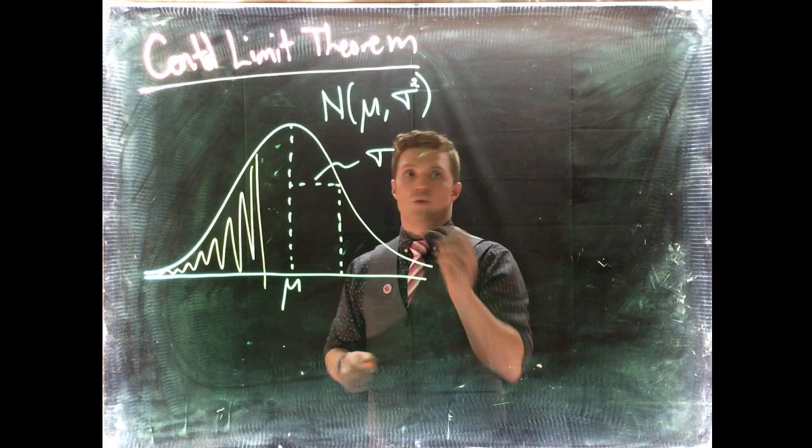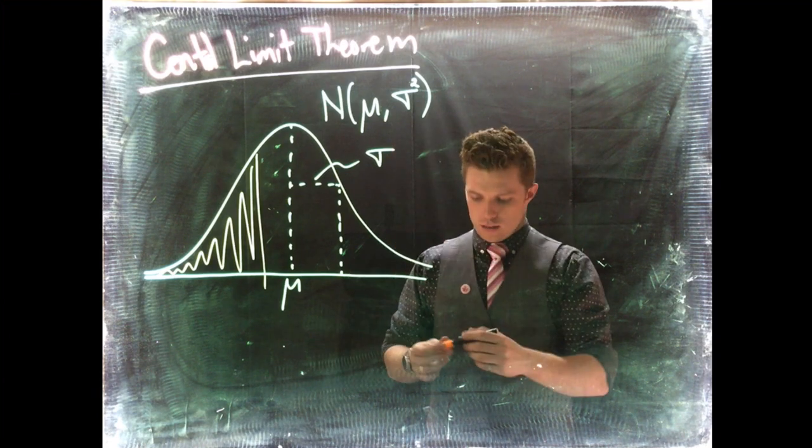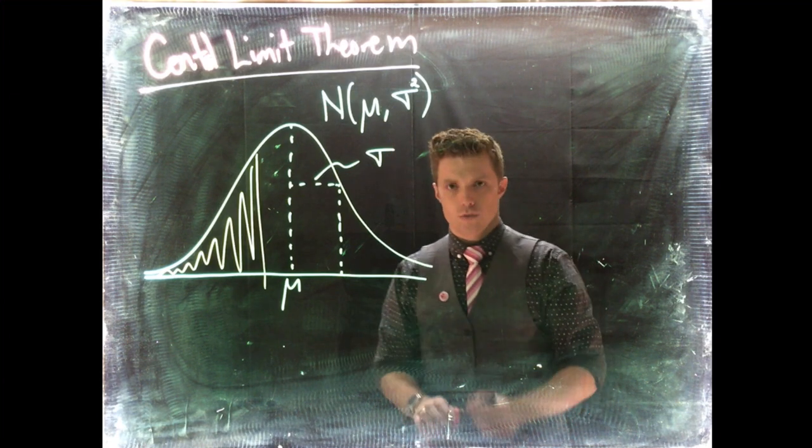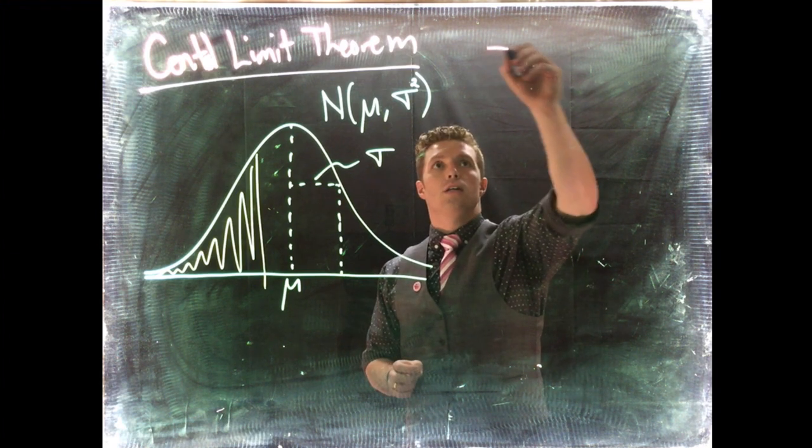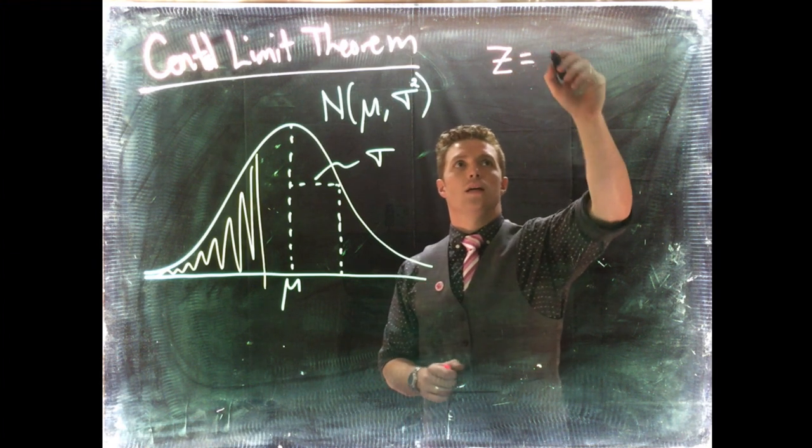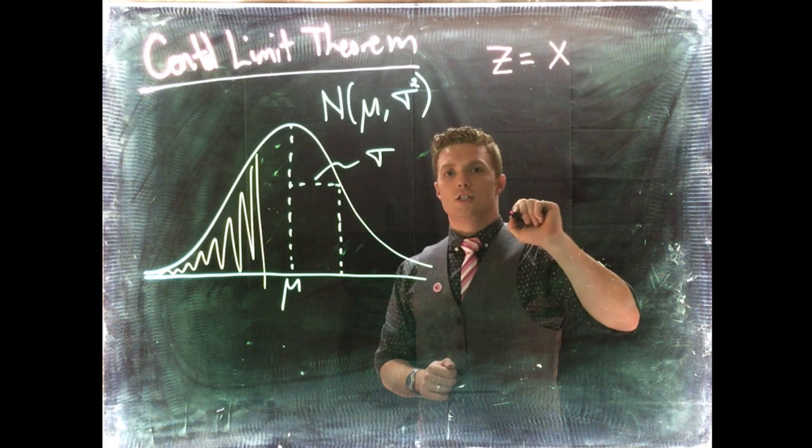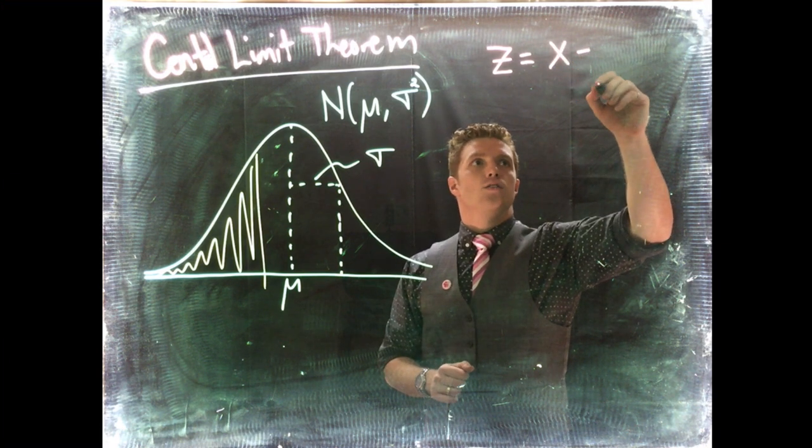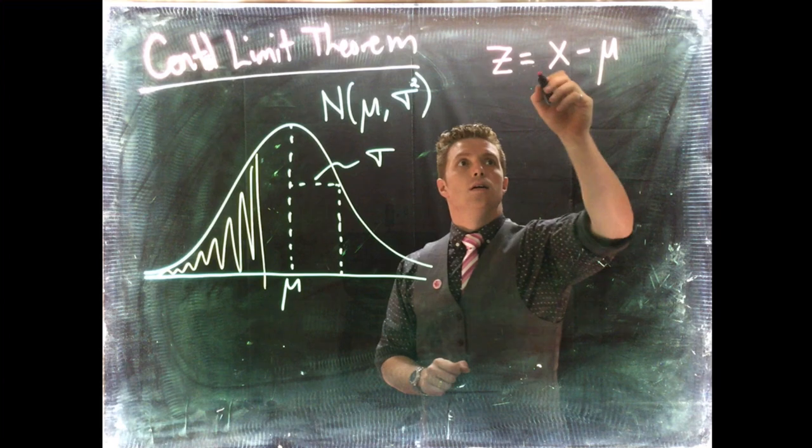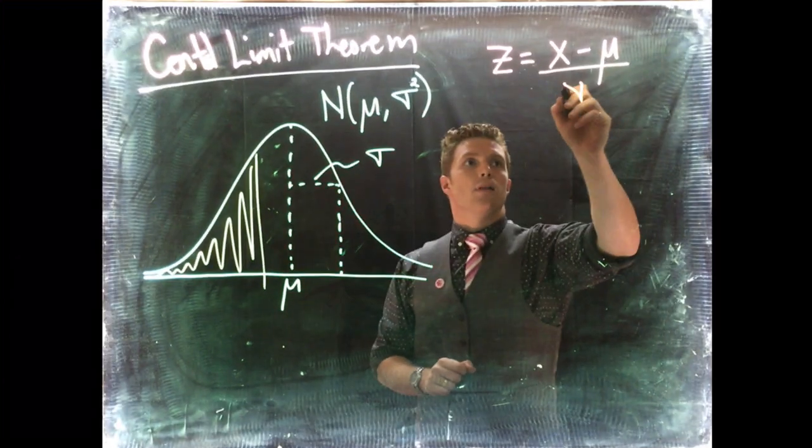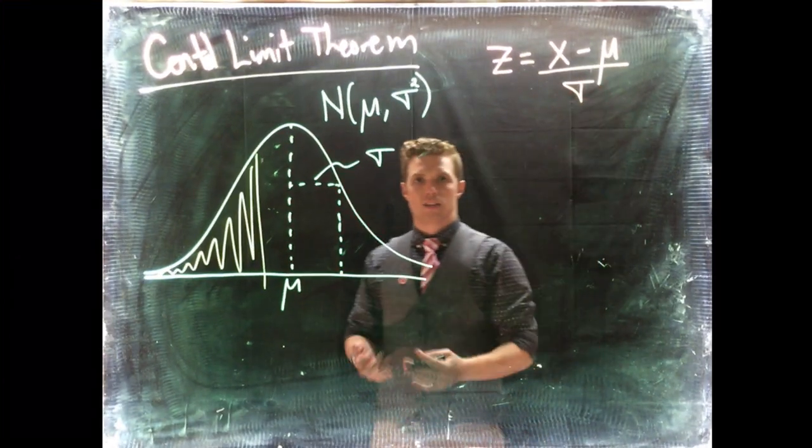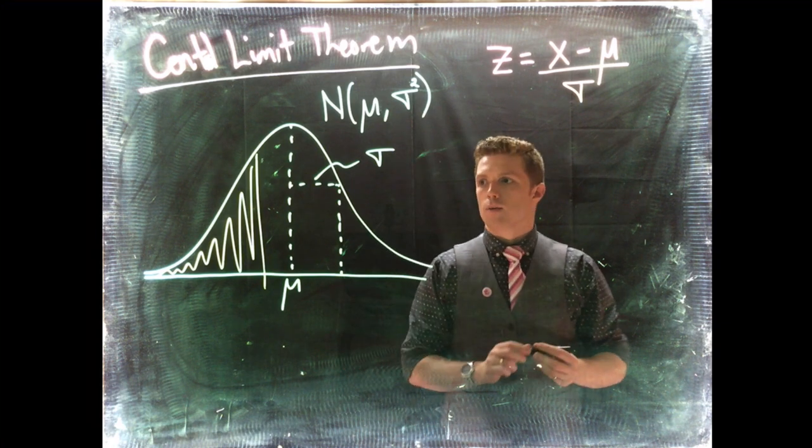Let's do a quick review. Back with our normal distribution, we knew that we could calculate out the z-score by simply doing the single observation minus the population mean divided by the population standard deviation. That would tell us how many standard deviations away we are from the mean.